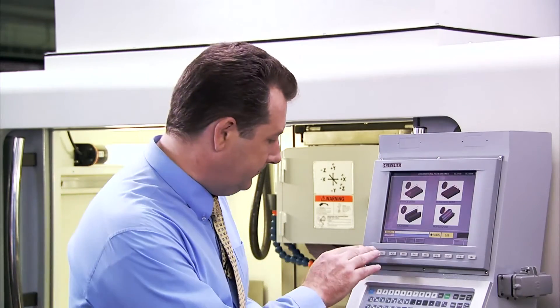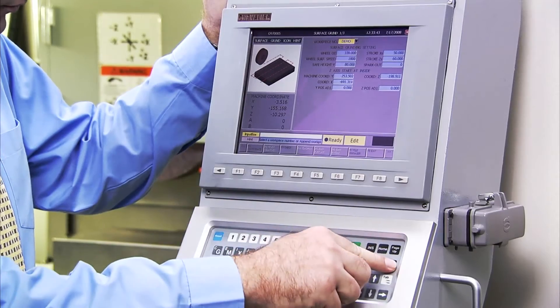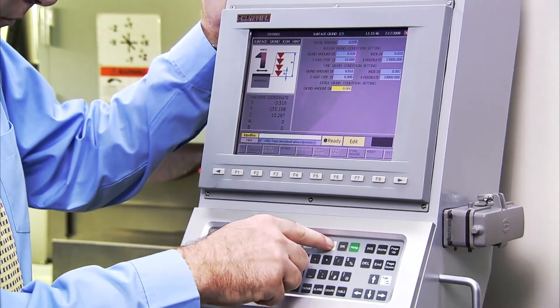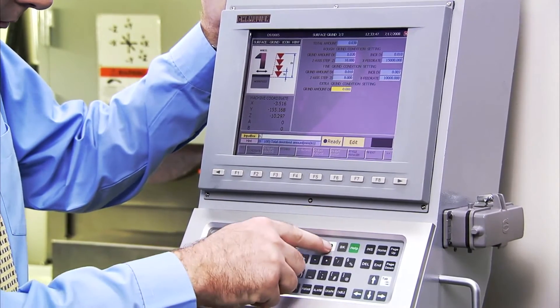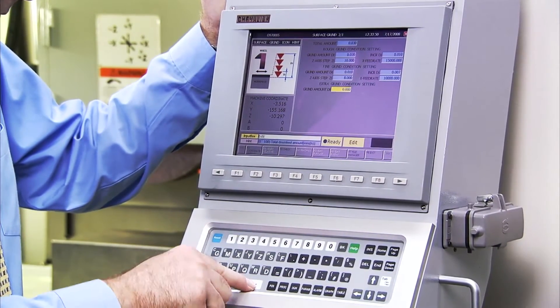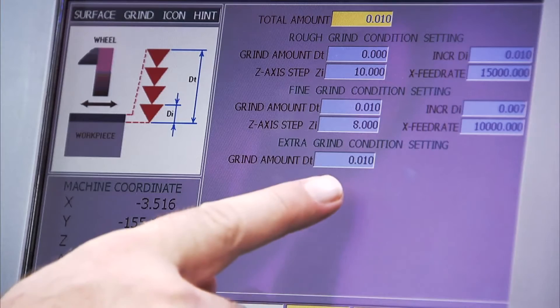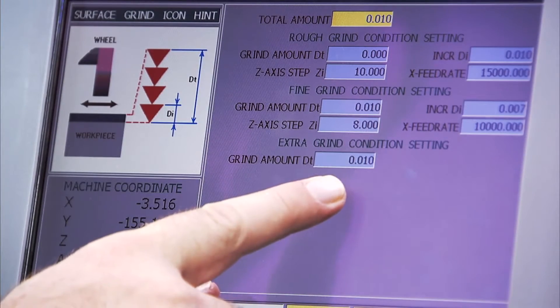One of the unique features of the Smart grinder from Chevalier is the additional cut feature. This allows additional cuts to be made without the need to start from the beginning of the grinding cycle. Just input the additional cut depth and the Smart machine will do the rest for you.